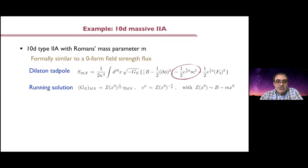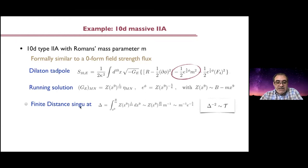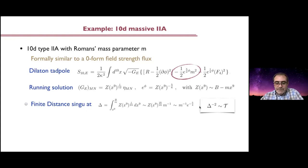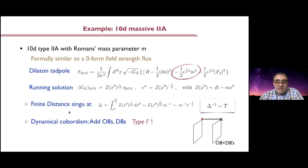The running solutions were studied many years ago and you can observe that they have a finite-distance singularity — finite distance in spacetime — when this kind of warp factor function has a zero. This b is some kind of integration constant in the theory, but eventually you cannot run arbitrarily long; you hit a zero meaning you have a singularity, and you can compute the distance in spacetime to the singularity and see that it scales with the tadpole in this particular way, according to the lesson we were recalling. The second observation is that what resolves the singularity is a dynamical cobordism effect — adding orientifold eight-planes and D8-branes — so you end up having something like half of Type I prime theory.